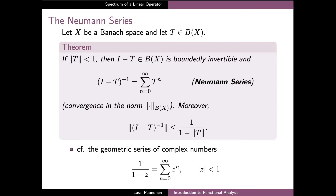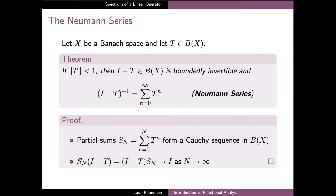We can immediately observe that the Neumann series has precisely the same form as a geometric series of complex numbers, where the scalar powers have been replaced by the powers of the bounded operator T obtained by composition of T with itself. The proof of the Neumann series is quite straightforward. In the first part we can use the property that the norm of T is less than 1 to show that the partial sums of the series form a Cauchy sequence in the space of bounded linear operators.